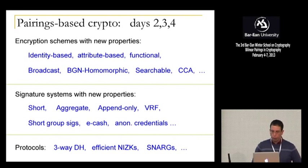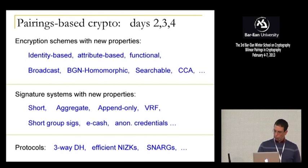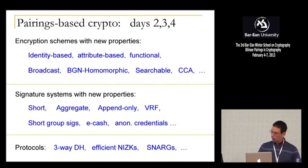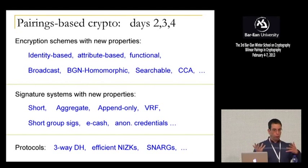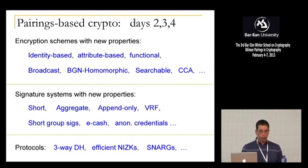Pairing-based crypto has mushroomed into a huge area. We're going to spend basically days two, three, and four covering the basics to the latest and greatest in pairing-based crypto. Allison and I are going to talk about identity-based crypto, attribute-based encryption, functional encryption, chosen-ciphertext security, and so on. Anna is going to talk about privacy applications of pairings — eCache, anonymous credentials. Jens has amazing results showing how to do non-interactive zero knowledge very efficiently with pairings, succinct non-interactive arguments. The goal is basically to prepare you for doing research in the field.